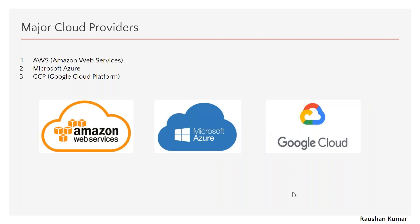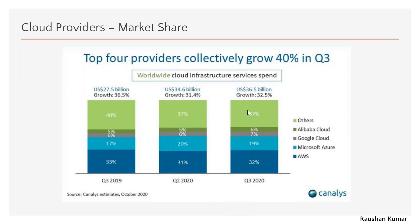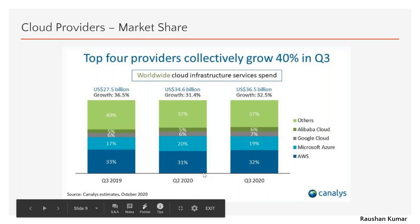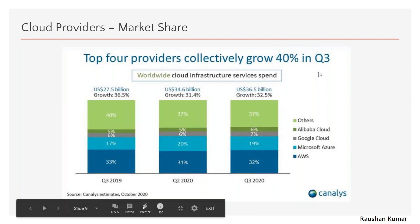The three major cloud players are AWS, Azure, and GCP. For market share, AWS has the biggest share — around 33% — followed by Azure, then Google Cloud. There are other providers too: Alibaba, Oracle, IBM, Digital Ocean. But no one comes close to AWS because they entered the market early, back in 2008, and were the first player in the cloud market.